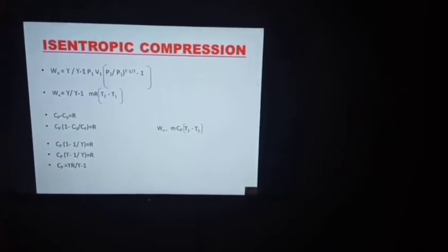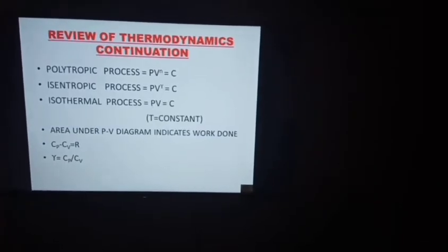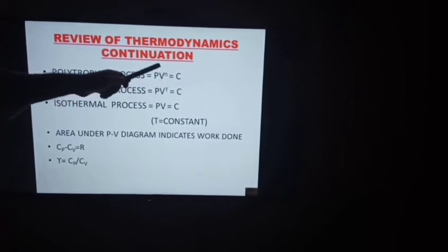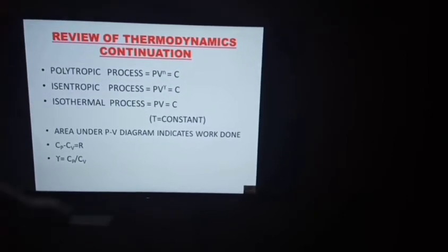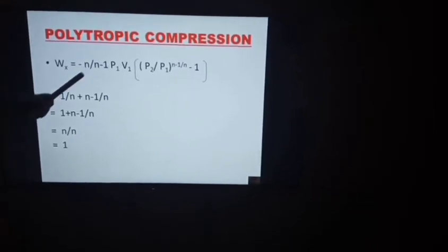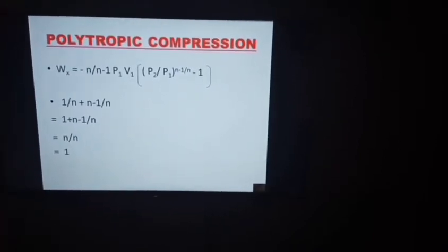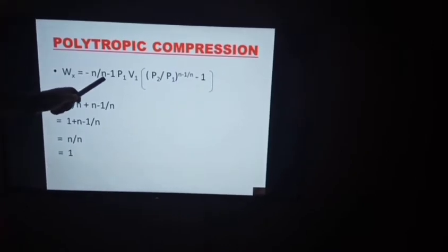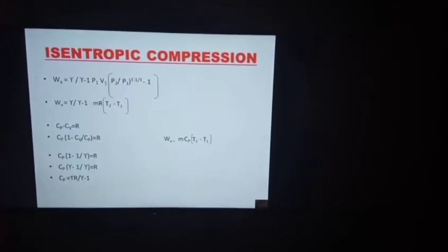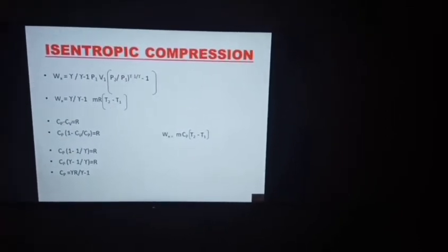Now, what happens when we compress isentropically? Since the isentropic and polytropic equations have a similar form — the polytropic process uses N while the isentropic process uses gamma — we can obtain the isentropic work by replacing N with gamma in the polytropic equation. This gives: W = −[γ/(γ−1)] × P1V1 × [(P2/P1)^((γ−1)/γ) − 1].